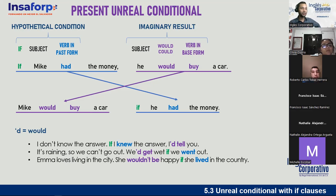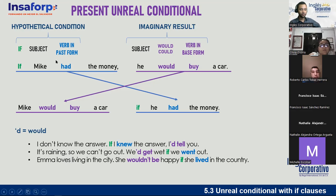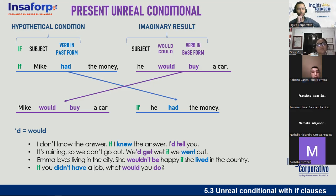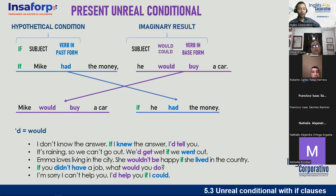'If you didn't have a job, what would you do?' — Si no tuvieras trabajo, ¿qué harías? But you do have a job — it's a hypothetical situation. And finally: 'I'm sorry I can't help you. I'd help you if I could' — same as 'I would help you if I could.' Te ayudaría si pudiera, pero no puedo.